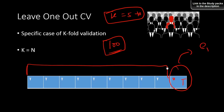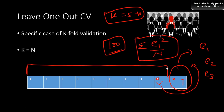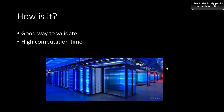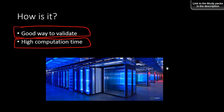Then we change the holdout observation, recalculate error 2, and keep doing that. We get error 1, error 2, error 3, and so on. The average error — you can square them to get mean square error — tells us the expected error rate for future predictions. However, this is very computationally intensive. If you have 100,000 observations, you need to build 100,000 models and validate 100,000 times.